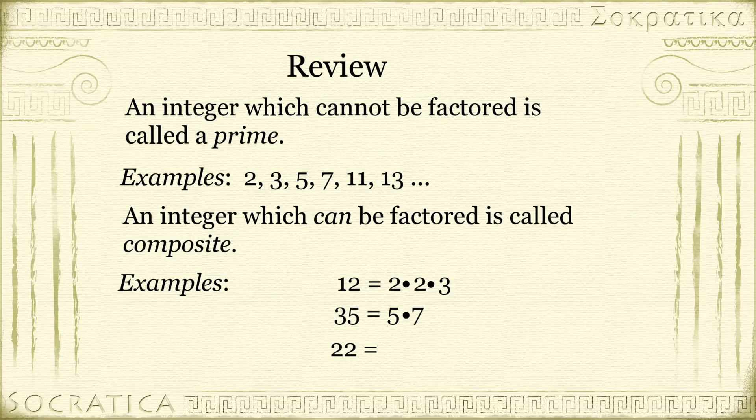And 22 can be written as 2 times 11. Once again, you can't factor this further. 2 and 11 are prime. So we call this the prime factorization of 22.